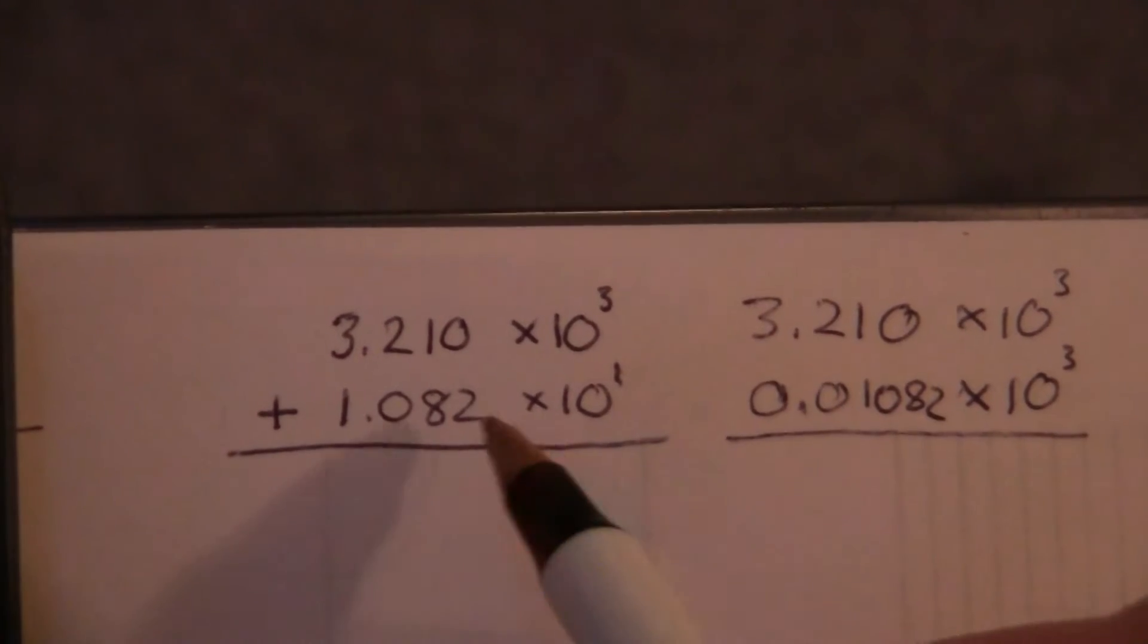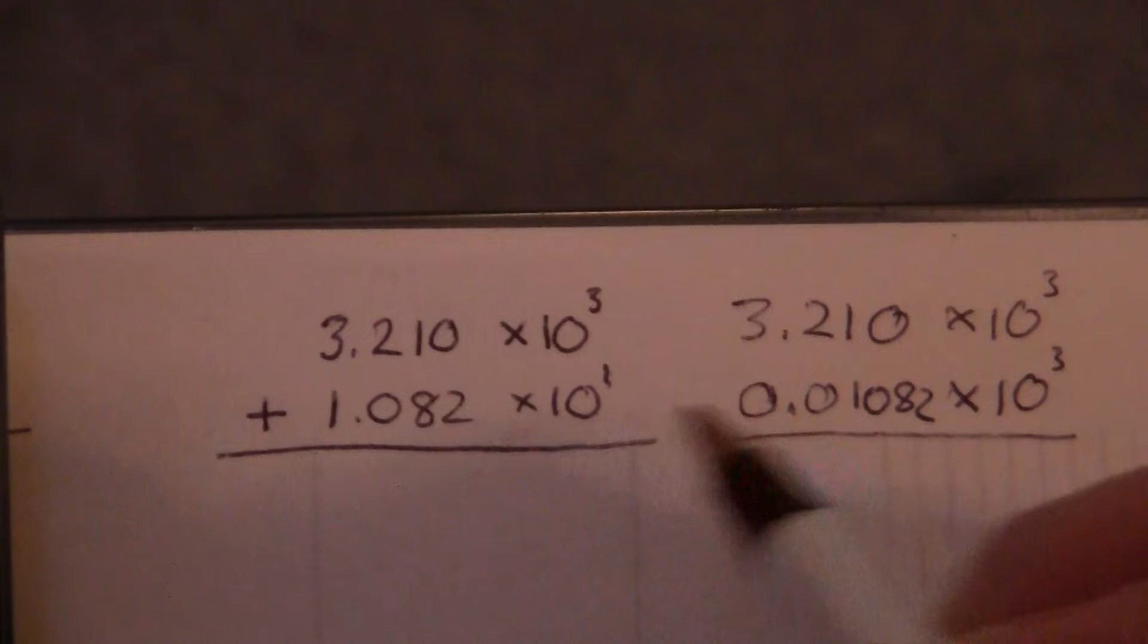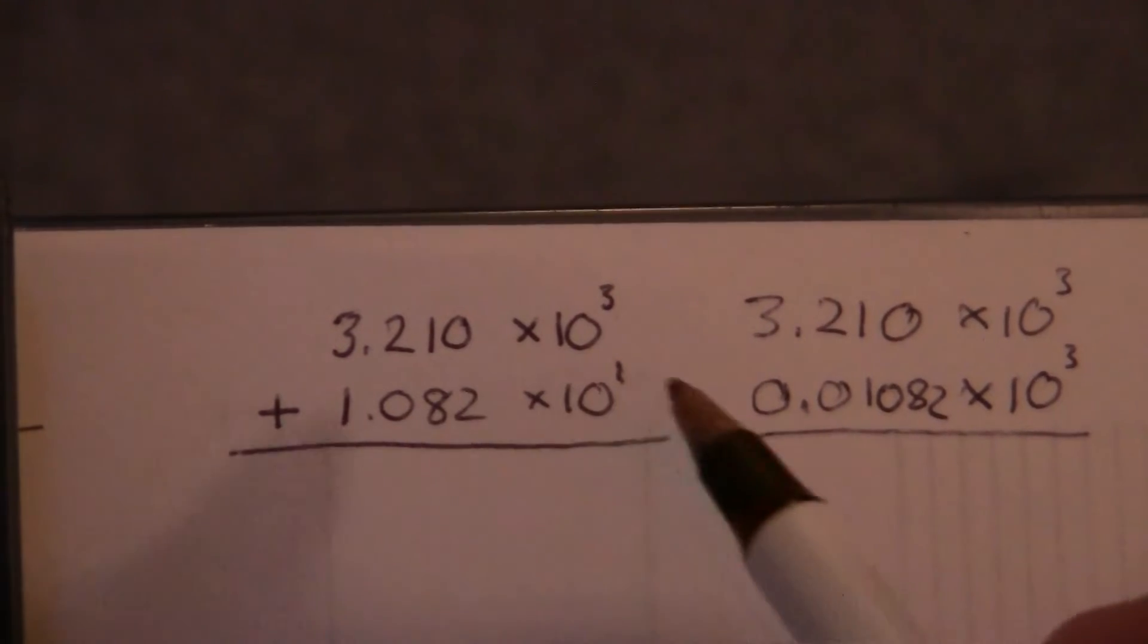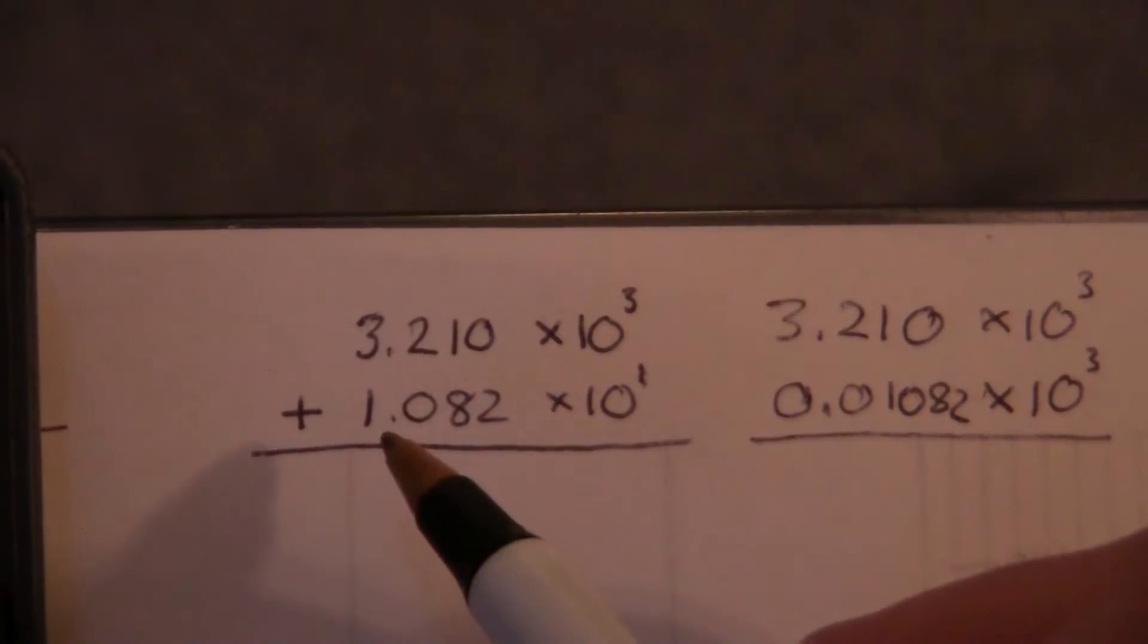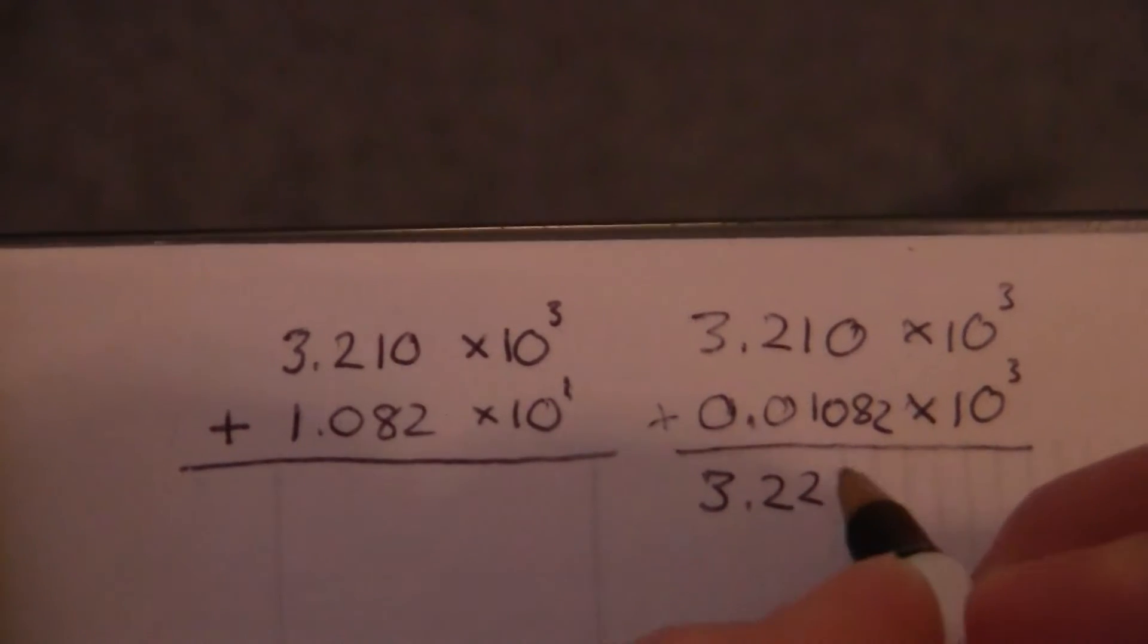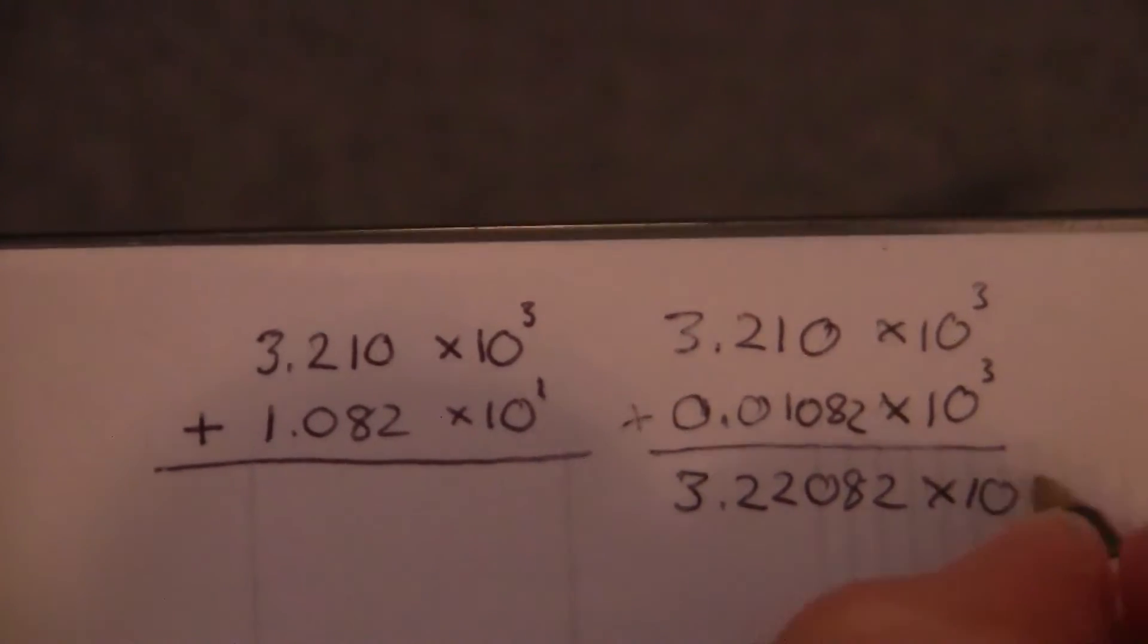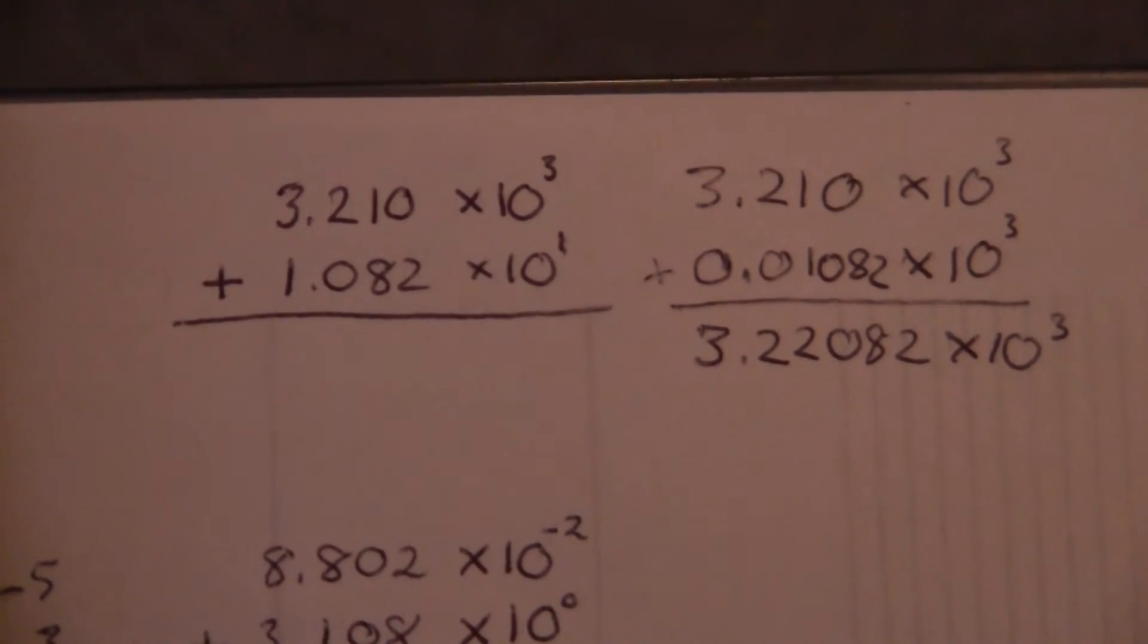Hopefully that makes sense. We'll do a few more to get the idea. So now this is where our decimals really are aligned. It's not here, because now they're both being pushed the same amount, and so they're always going to be in line wherever they are. Whereas here, this one's being pushed 3, this one's only being pushed 1, and so in reality, they're not aligned here. So now let's go ahead and add these, and we have 3.22082 times 10 to the third. And you'll notice it's already in proper scientific notation, so we're done.